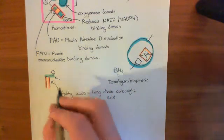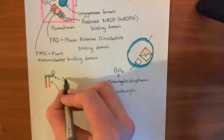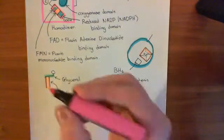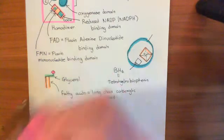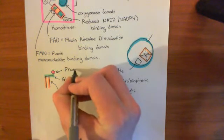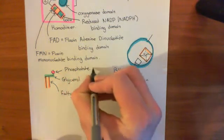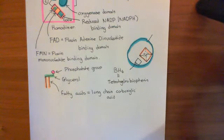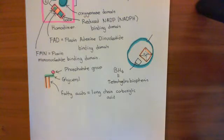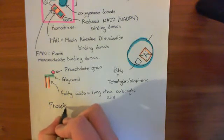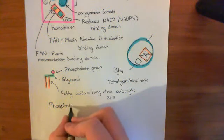You've taken two long-chain carboxylic acids and esterified them to the first and the second hydroxyl groups of your glycerol molecule. Then onto the third hydroxyl group of glycerol, you've attached a phosphate group here. So that's a cartoon structure of a phospholipid — glycerol with two fatty acids esterified to it, and then in the final third hydroxyl group, a phosphate group. That's why it's called a phospholipid: you've got a phosphate group and a lipid structure.